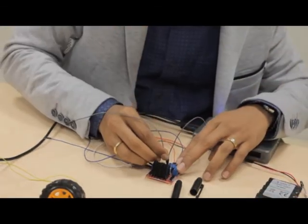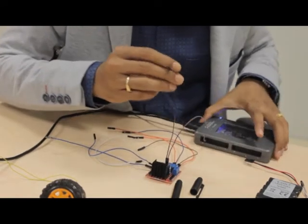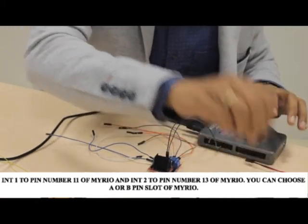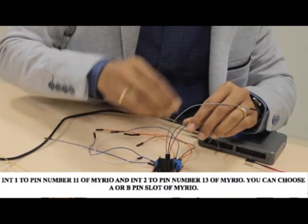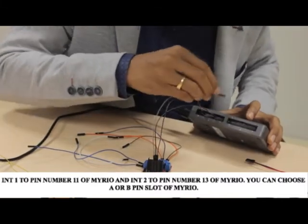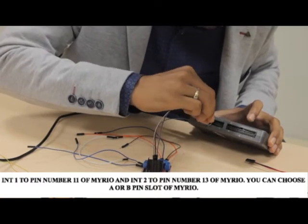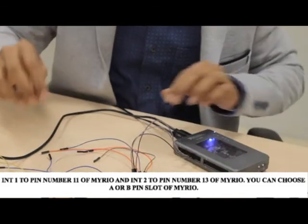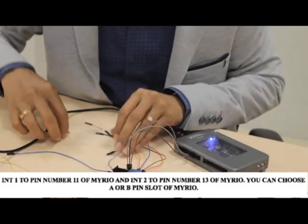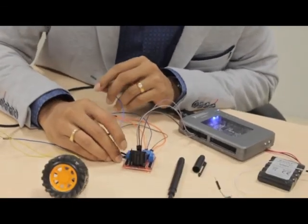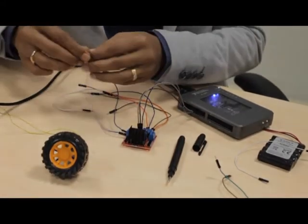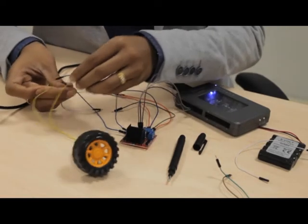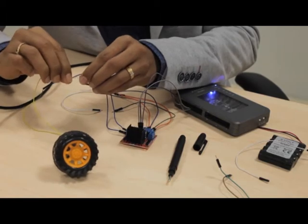Let's take two female to female jumper cables. Input 1 goes to pin number 11, and input 2 goes to pin number 13. We have the motor OUT3 and OUT4 which goes to the two terminals of the motor. Let's connect the two terminals of the motor, and after the rotation we can judge and control the clockwise and anticlockwise direction.